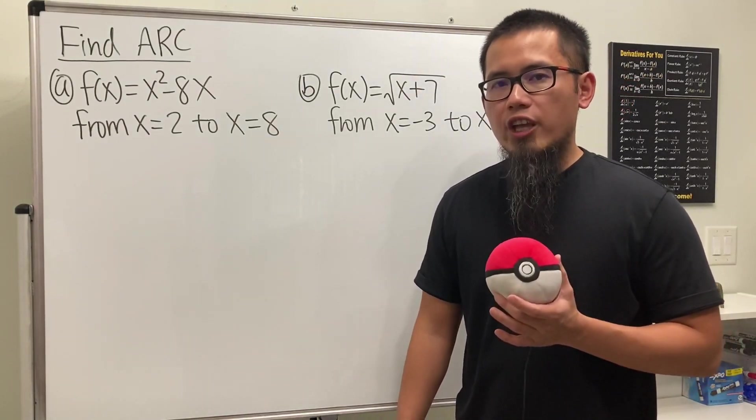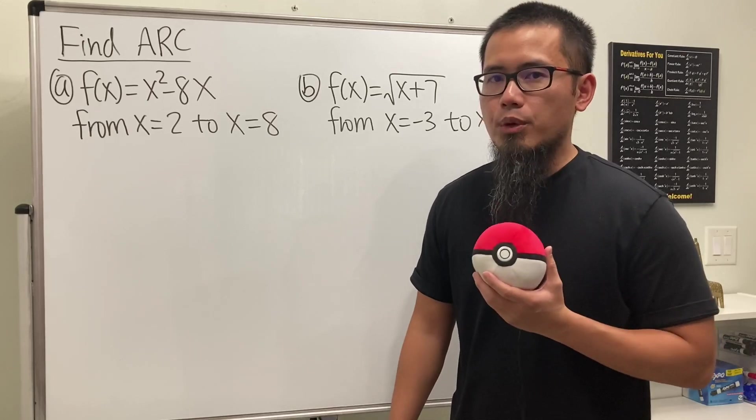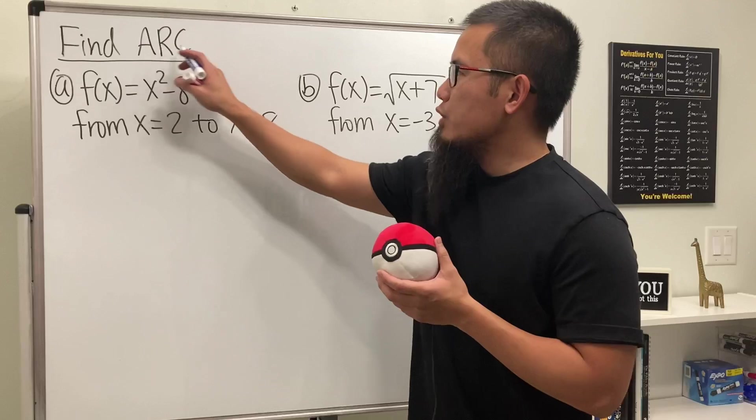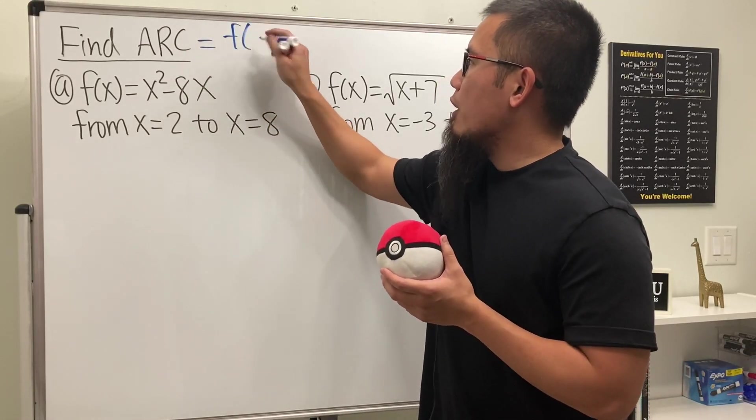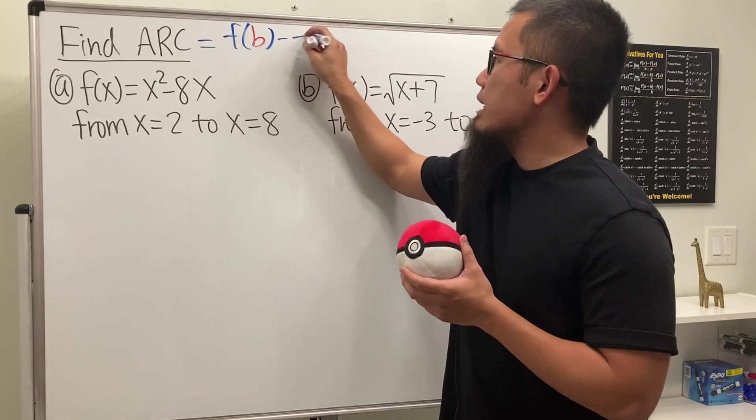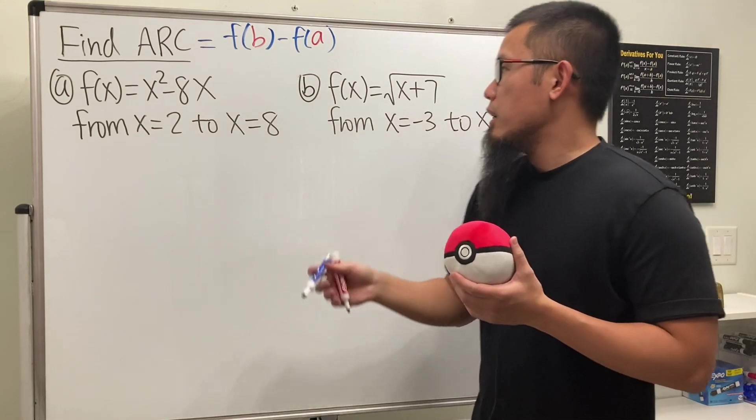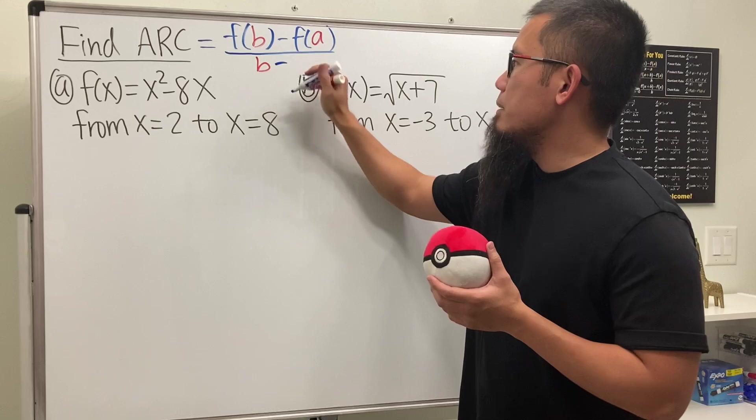How do we find the average rate of change of a function going from a to b? In this video I'll give you two examples. First, I'll give you the formula to find the average rate of change. Going from a to b, we will have to compute f of b minus f of a, and this right here is the net change, and then divided by the interval, which is b minus a.